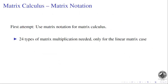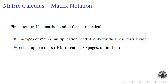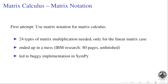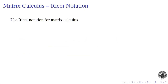If you use matrix notation, you end up with 25 different types of matrix multiplications needed just for the linear matrix case. And if you want to compute the derivative again, you need to know the derivatives of all 24 types — the whole thing blows up. I was working on this for a few years and it gave me real headaches. It even led to a buggy implementation in SymPy. This is really not the right way to do this.